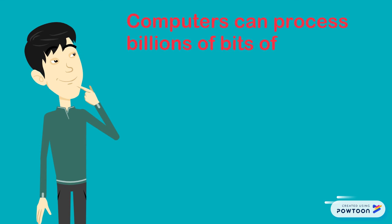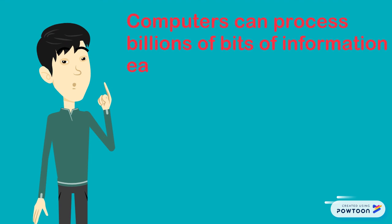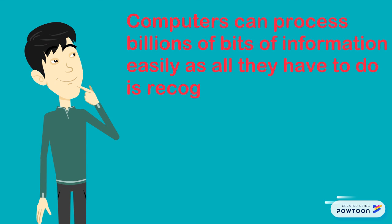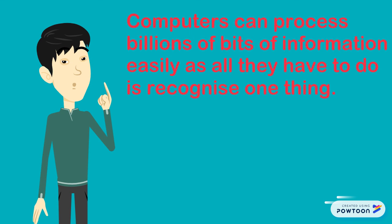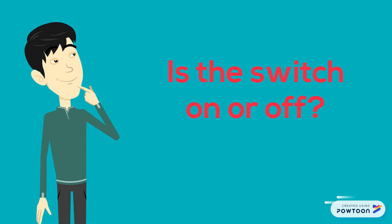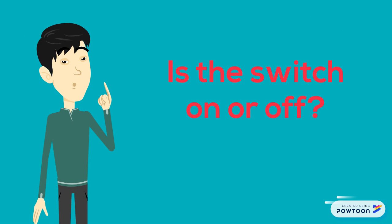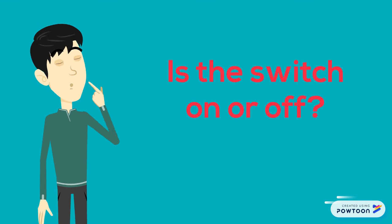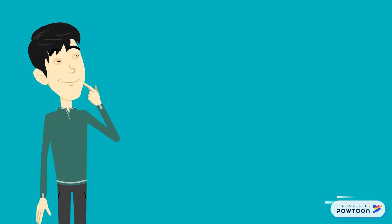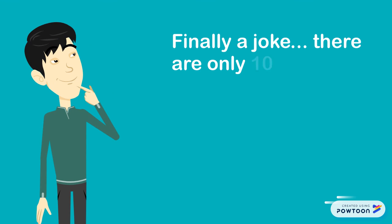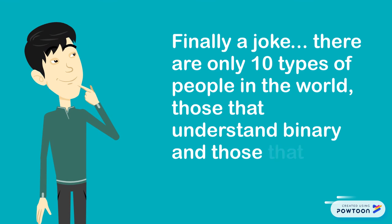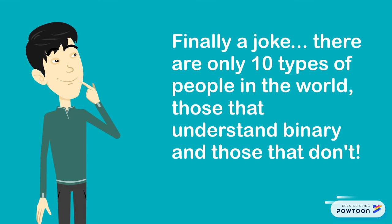Computers can process billions of bits of information easily, as all they have to do is recognise one thing: is the switch on or off? And finally, a joke — did you know there are only 10 types of people in the world? Those that understand binary, and those that don't.